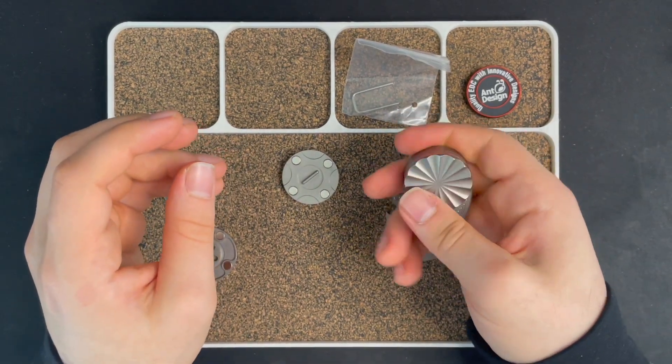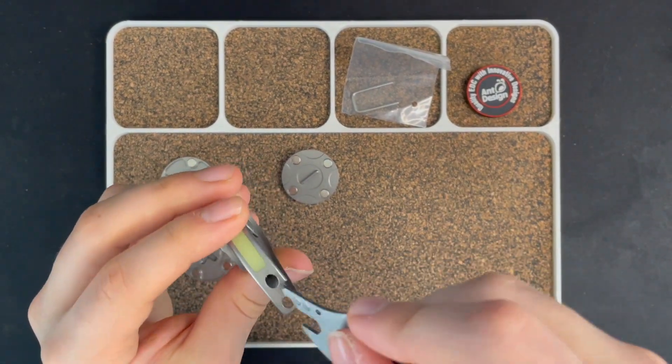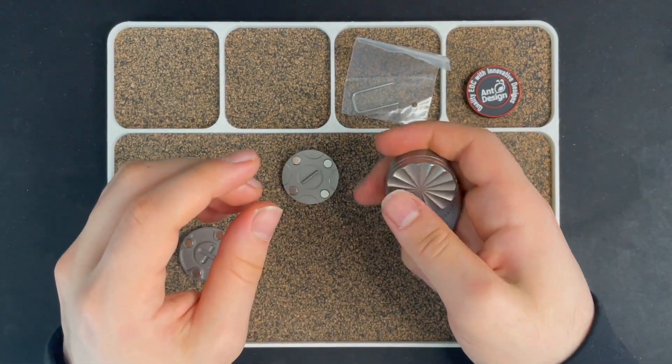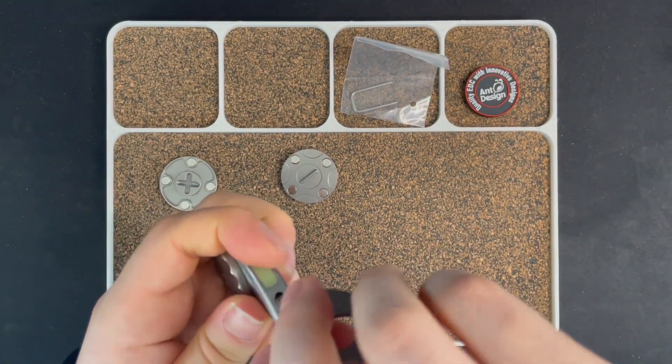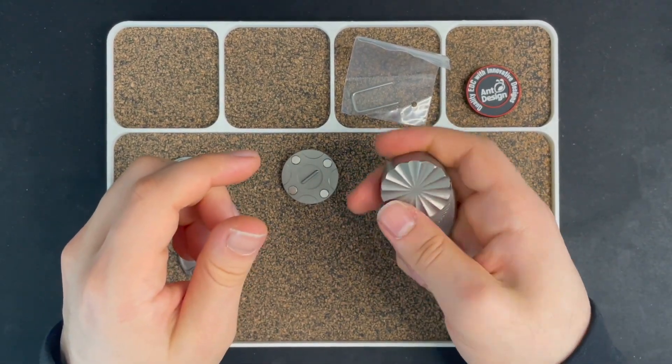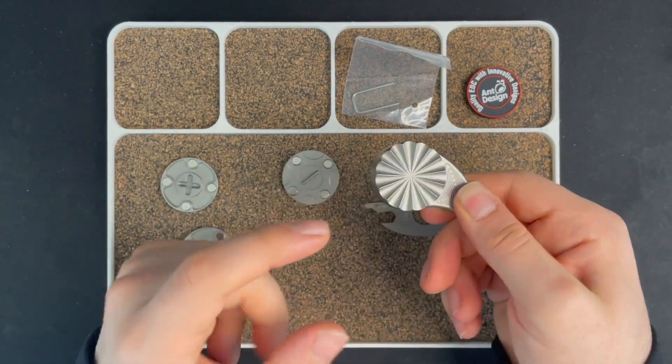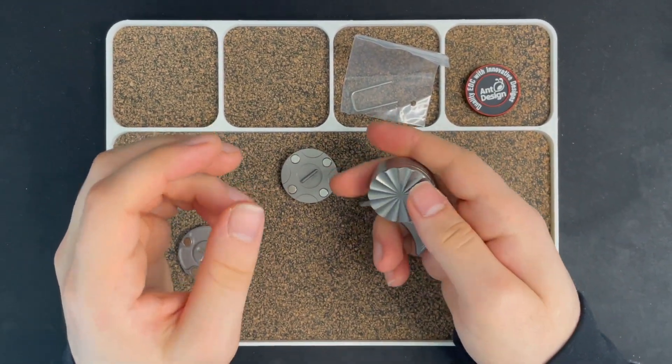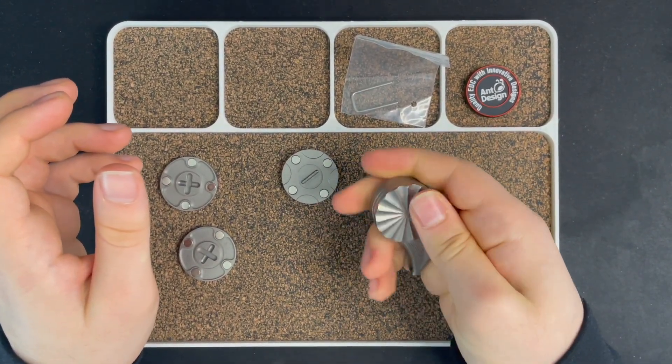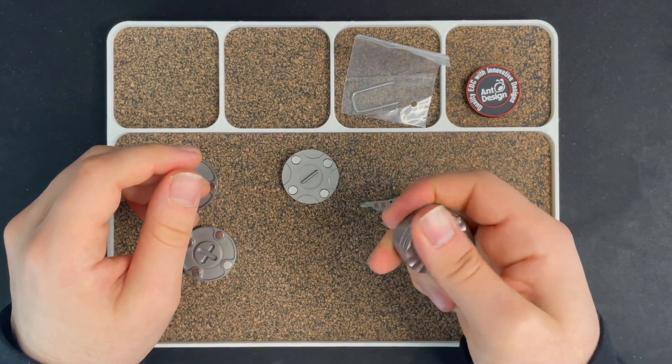See, now it becomes like a haptic coin, which is pretty good. Haptic slash ratchet coin. I think if you make it looser a bit - there we go, that's perfect. I like it. I like the fact that you can have a spinner mode to it and then also a haptic coin to it too.